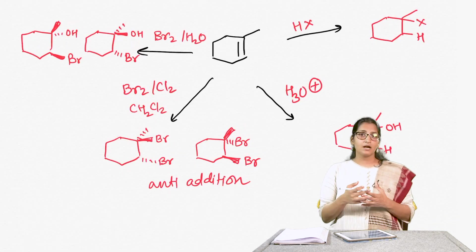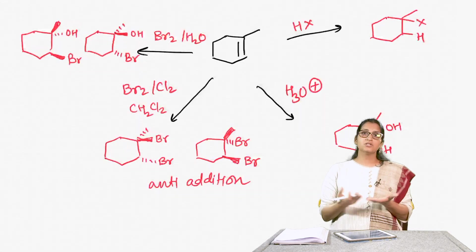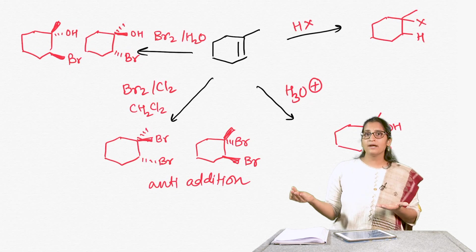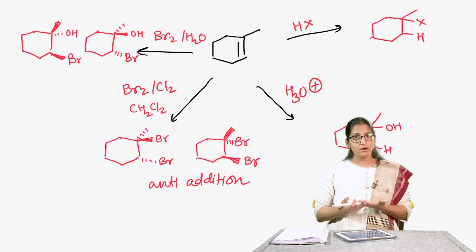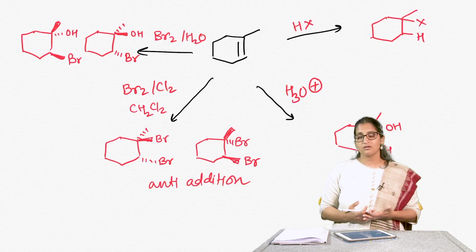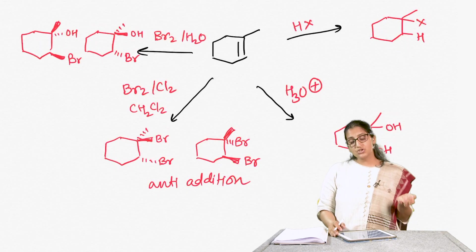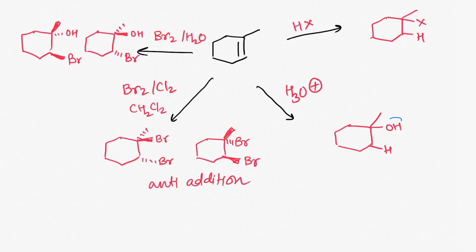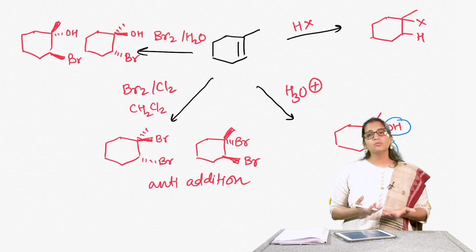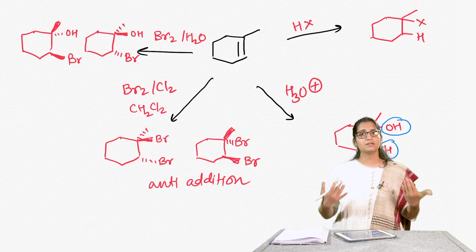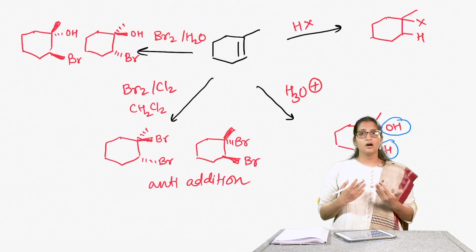Whenever you form a carbocation intermediate, the planar carbocation allows the bromide ion or water molecule to attack from the top or bottom, resulting in a racemic mixture. To summarize: H3O plus on an alkene gives OH on the more substituted carbon. This is how most alkenes are converted to alcohols on an industrial scale, but in the lab multiple other methods are used.